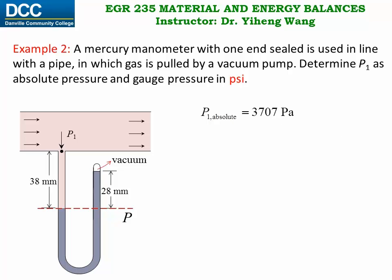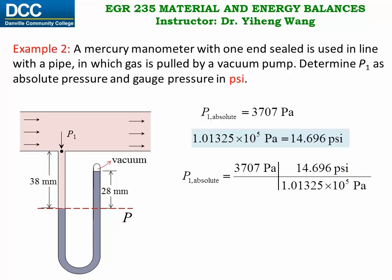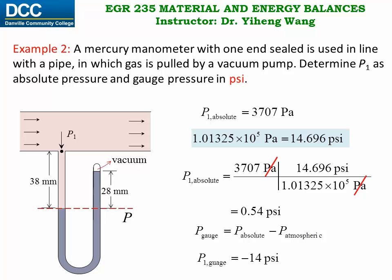Since we need to report the answers in psi, we use the equality that 1 atmosphere equals 1.01325 times 10 to the 5th Pascal equals 14.696 psi to set up our unit conversion, cancel out Pascal, and find P1 absolute pressure equals 0.54 psi. Since gauge pressure equals absolute pressure minus atmospheric pressure, and atmospheric pressure is 14.696 psi, P1 expressed as gauge pressure is negative 14.2 psi.